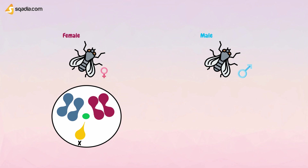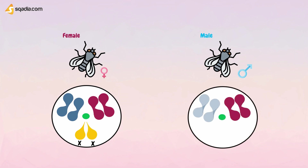In females, both sex chromosomes are identical, so these are called XX chromosomes. In males, one is rod-shaped and is like the sex chromosome of the female, so it is also called the X chromosome, while the other chromosome is hook-shaped and is called the Y chromosome.